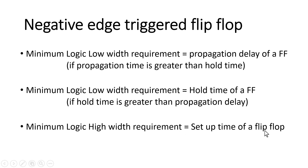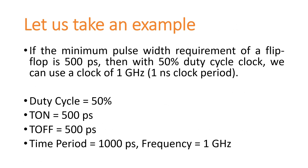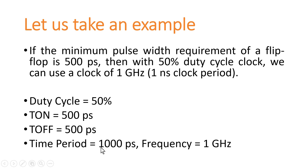Let us see a practical example. Assume the minimum pulse width requirement of a flip-flop is 500 picoseconds for both high and low width. With a 50% duty cycle clock, we can use a maximum operational frequency of 1 GHz. Because the duty cycle is 50%, T_on minimum is 500 ps and T_off equals T_on = 500 ps. Time period = T_on + T_off = 1000 ps, so frequency = 1/1000 ps = 1 GHz.